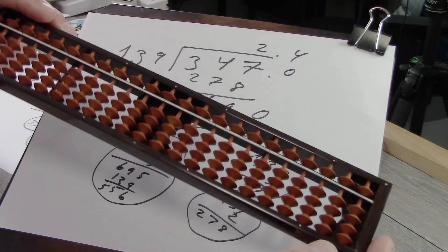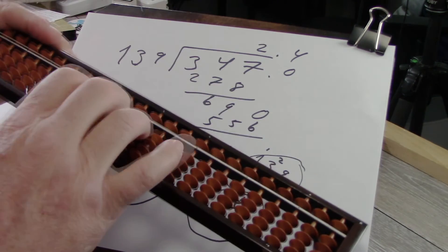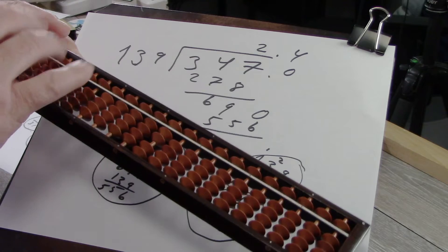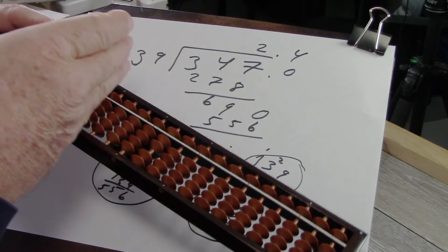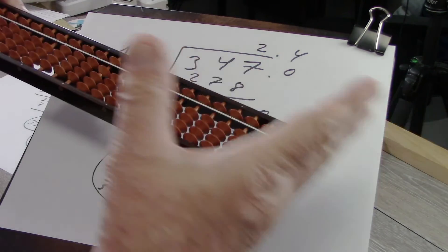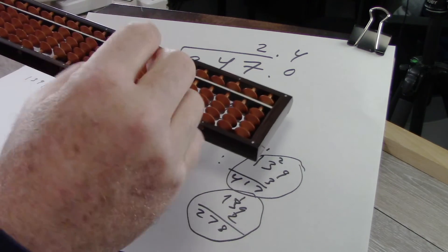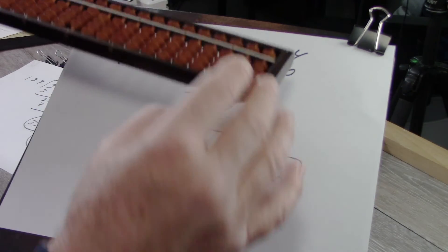But doing it on the abacus, you know, you've laid out your dividend and your divisor, and then you build up the quotient between them. But you may not have room, unless you have a really huge abacus, to actually do these sidebar multiplications.